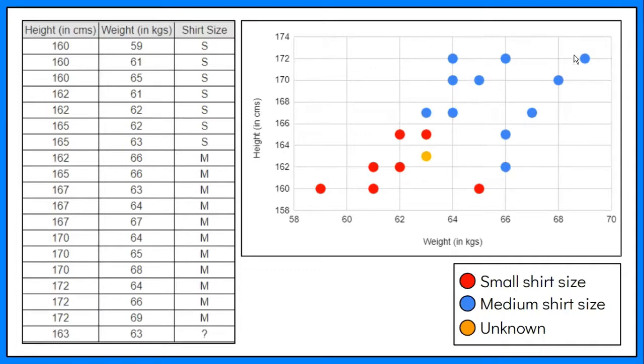While these blue dots are the data points for the employees with medium-sized shirts, the orange dot is the data point of the new case. And we are going to predict if the new case has small or medium shirt size.